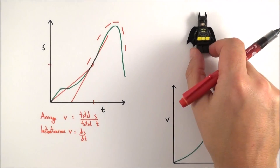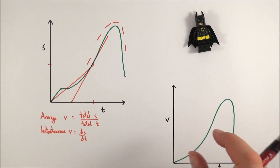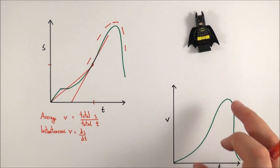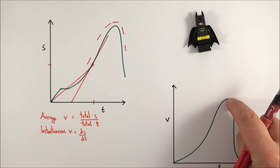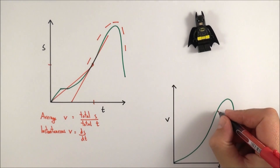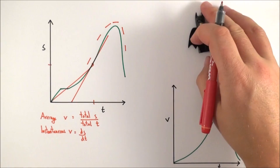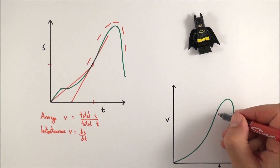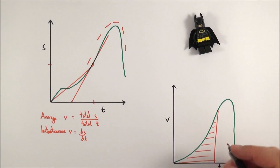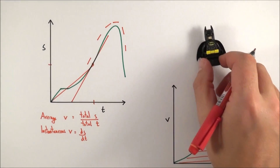We can also look at a velocity-time graph for Batman's behaviour. Here it's the gradient that tells us about the acceleration, and it's the area between the line and the x-axis which tells us the displacement. So if we want to find out how far Batman has travelled at a given time, we look at the area below the line — the area between the line and the x-axis — which is equal to Batman's displacement at that point.